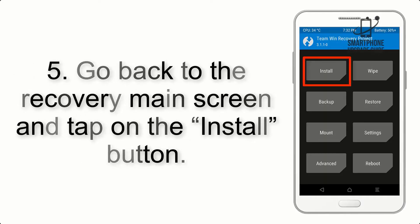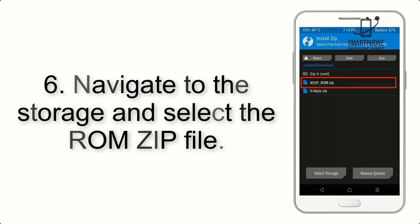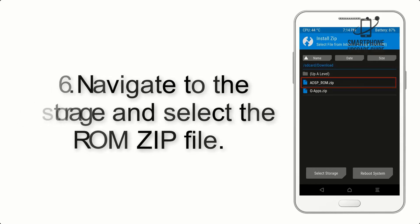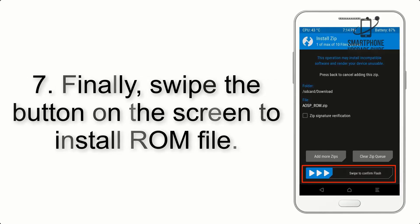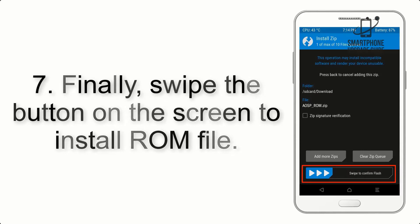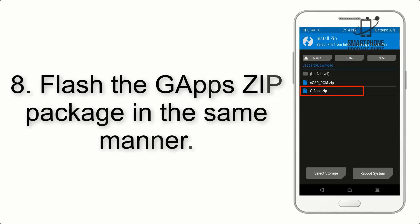Step 5: Go back to the recovery main screen and tap on the Install button. Step 6: Navigate to the storage and select the ROM zip file. Step 7: Finally, swipe the button on the screen to install the ROM file.